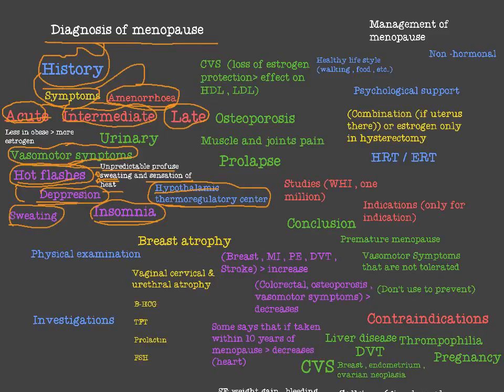The most important acute symptoms are hot flashes, depression, insomnia, and sweating. Intermediate symptoms include urinary symptoms such as urinary frequency, urgency, and urinary incontinence.